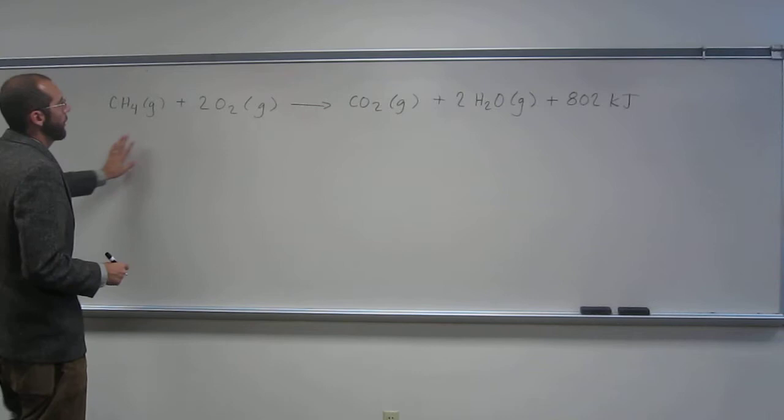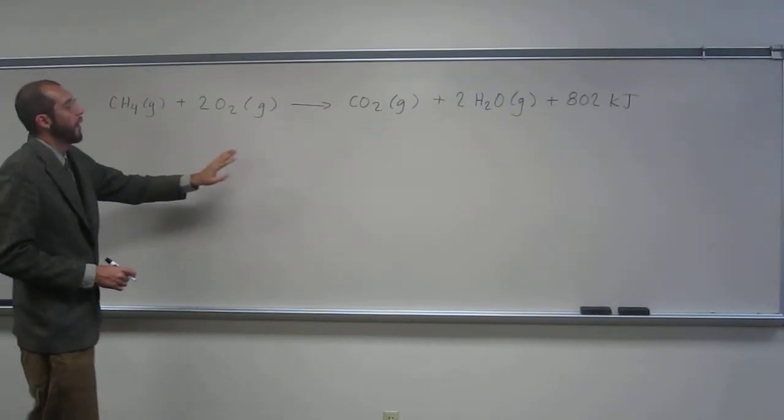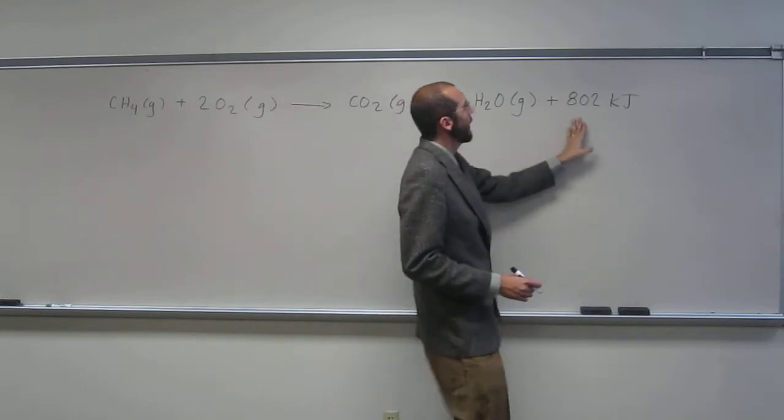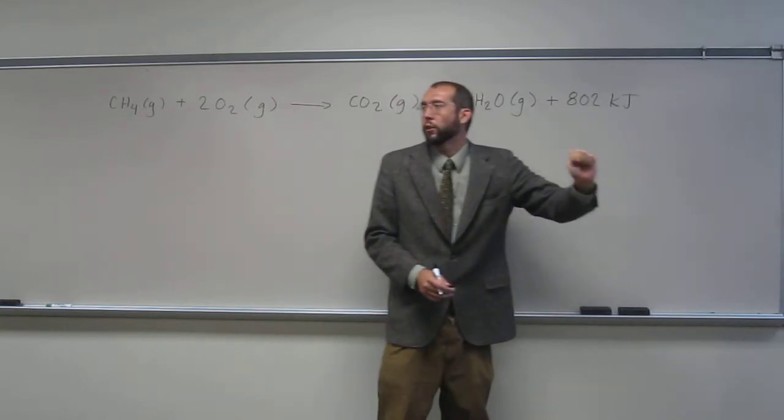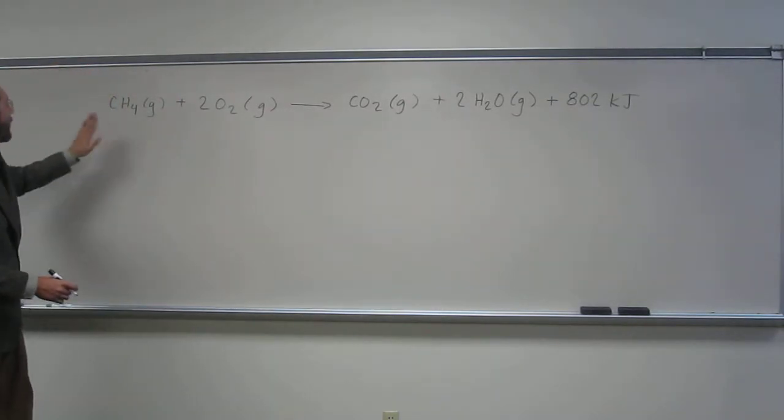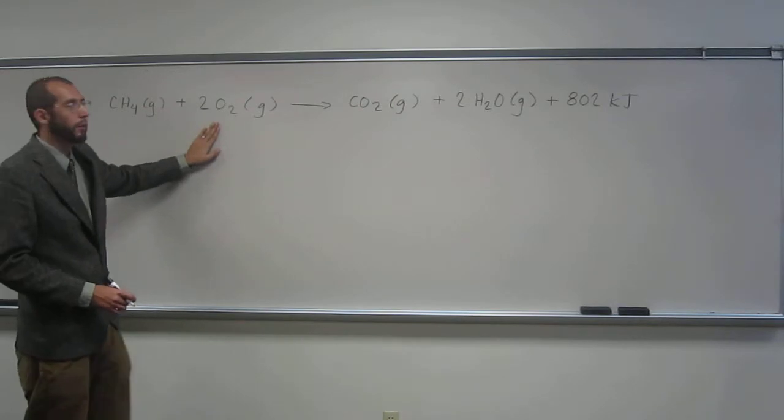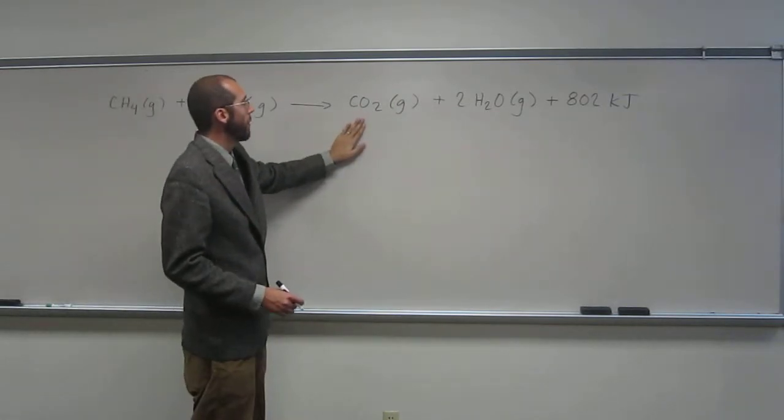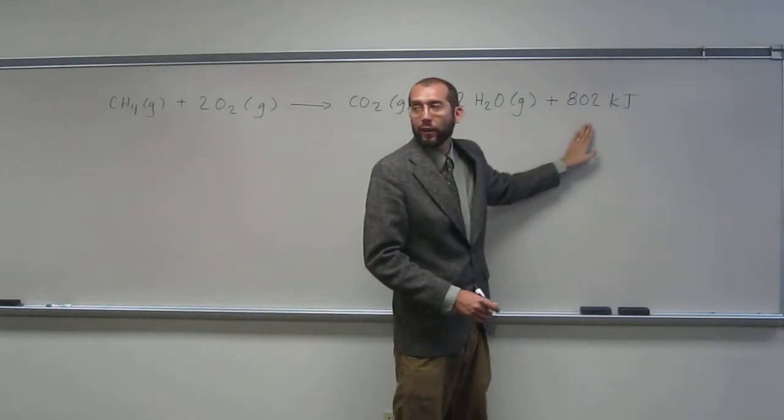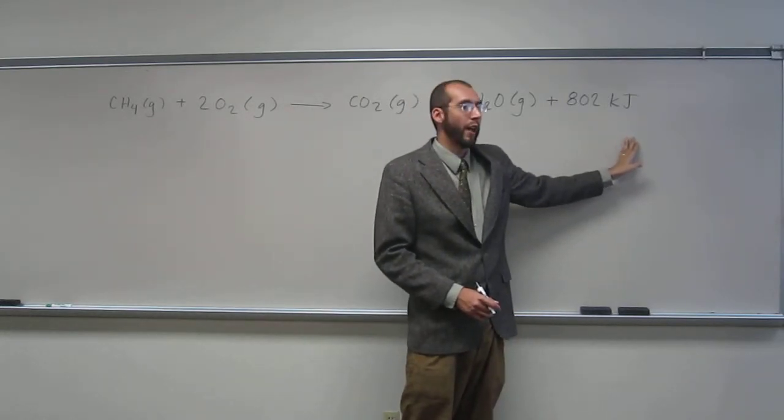So methane plus two oxygens goes to carbon dioxide plus two waters plus 802 kilojoules. So what is that saying? That's saying when you have one mole of methane and it reacts with two moles of oxygen, you're going to get one mole of carbon dioxide, two moles of water, and 802 kilojoules of energy out of it.